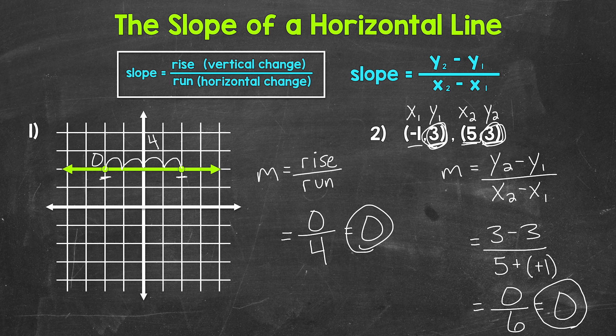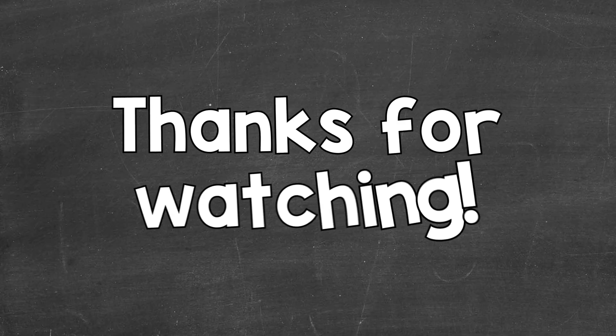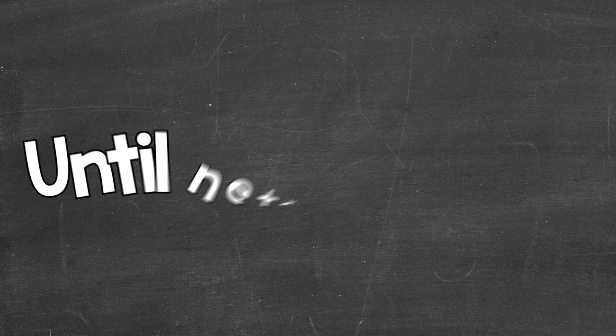So there you have it. There's the slope of any horizontal line. Any horizontal line has a slope of 0. I hope that helped. Thanks so much for watching. Until next time, peace.